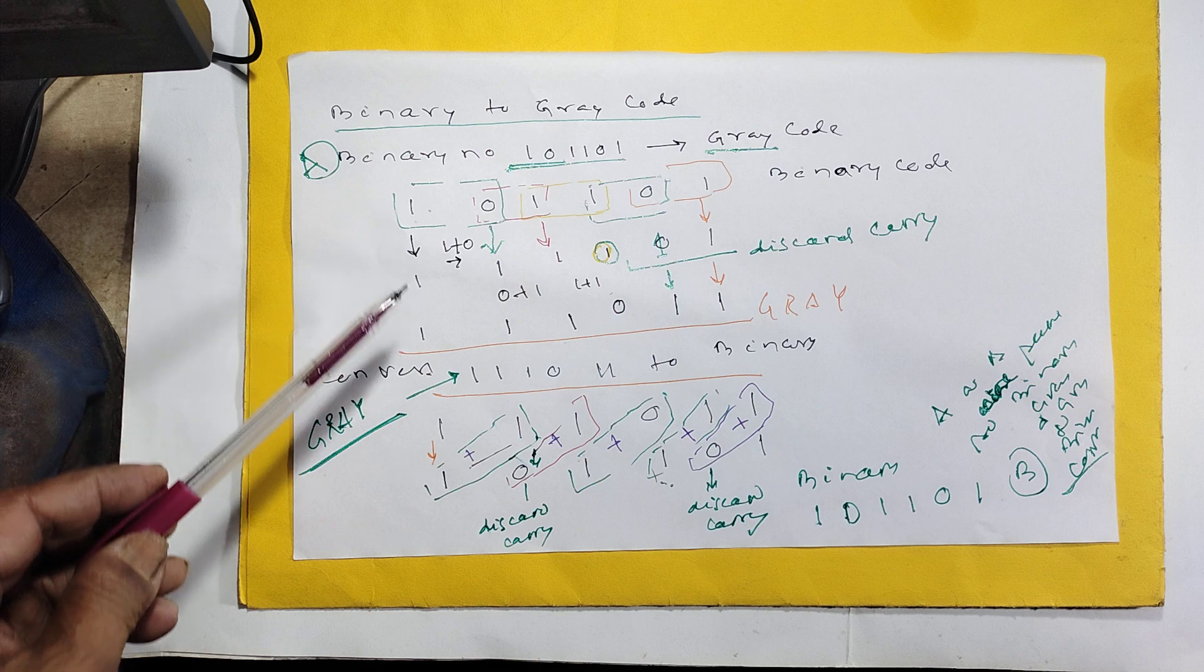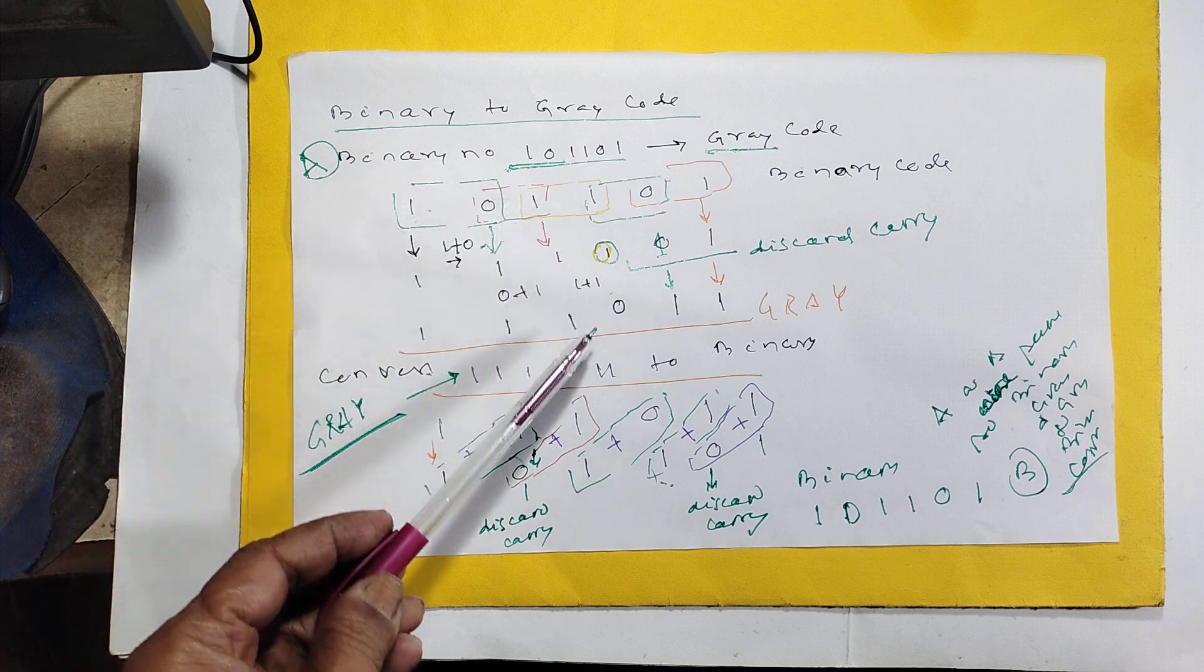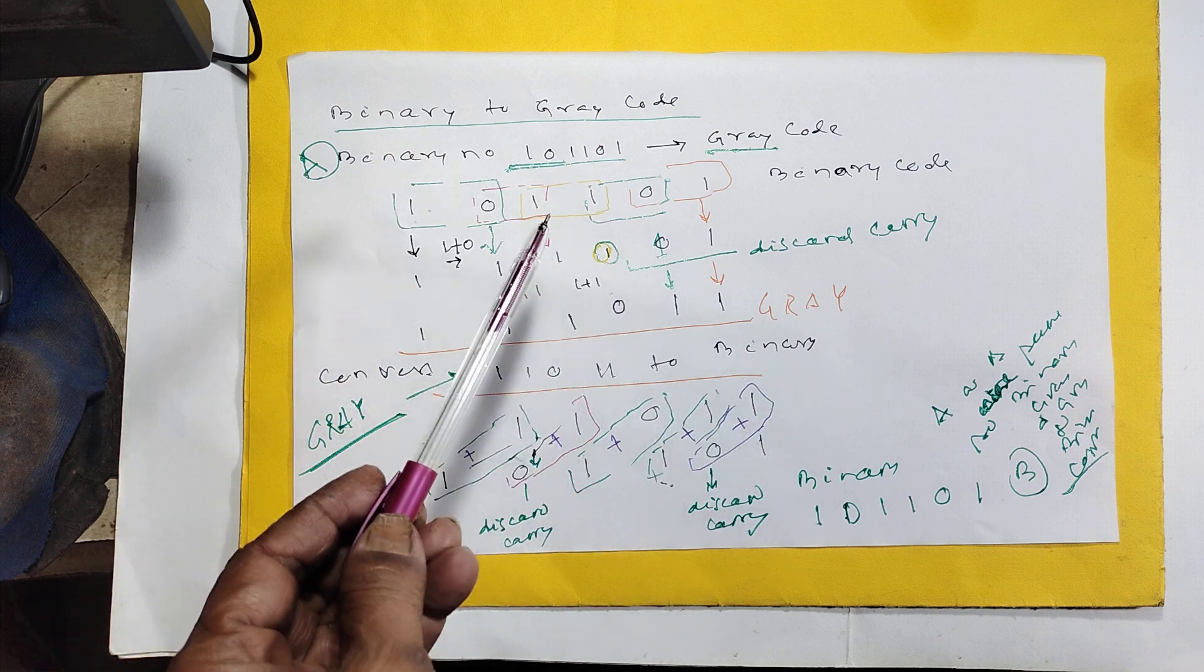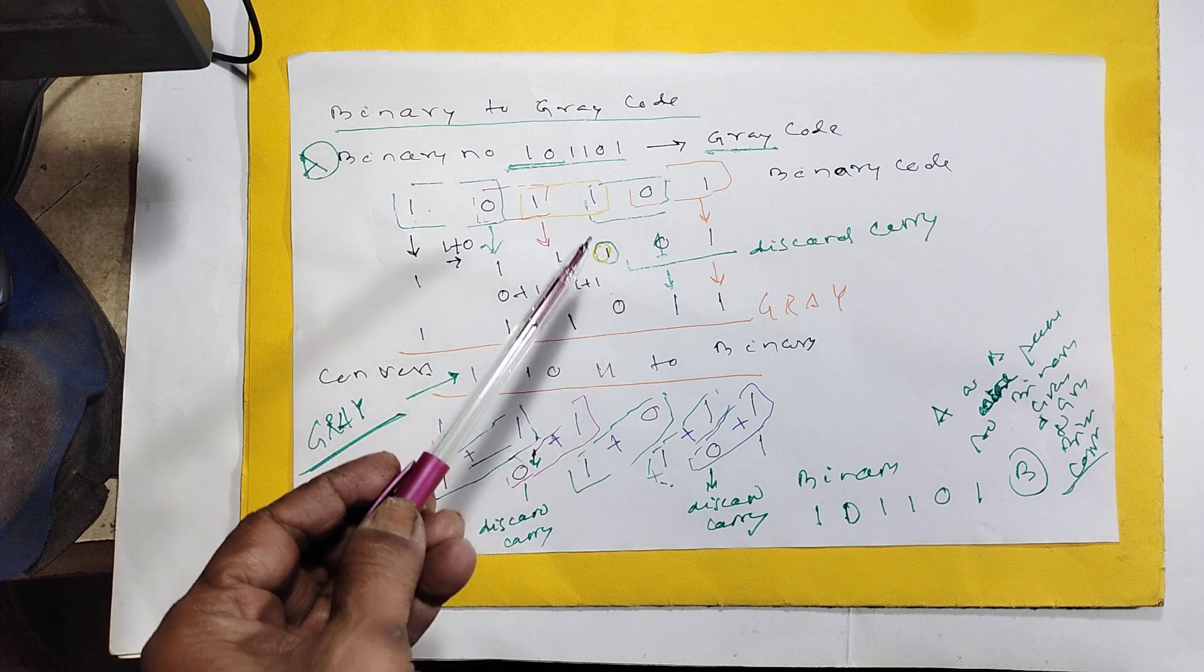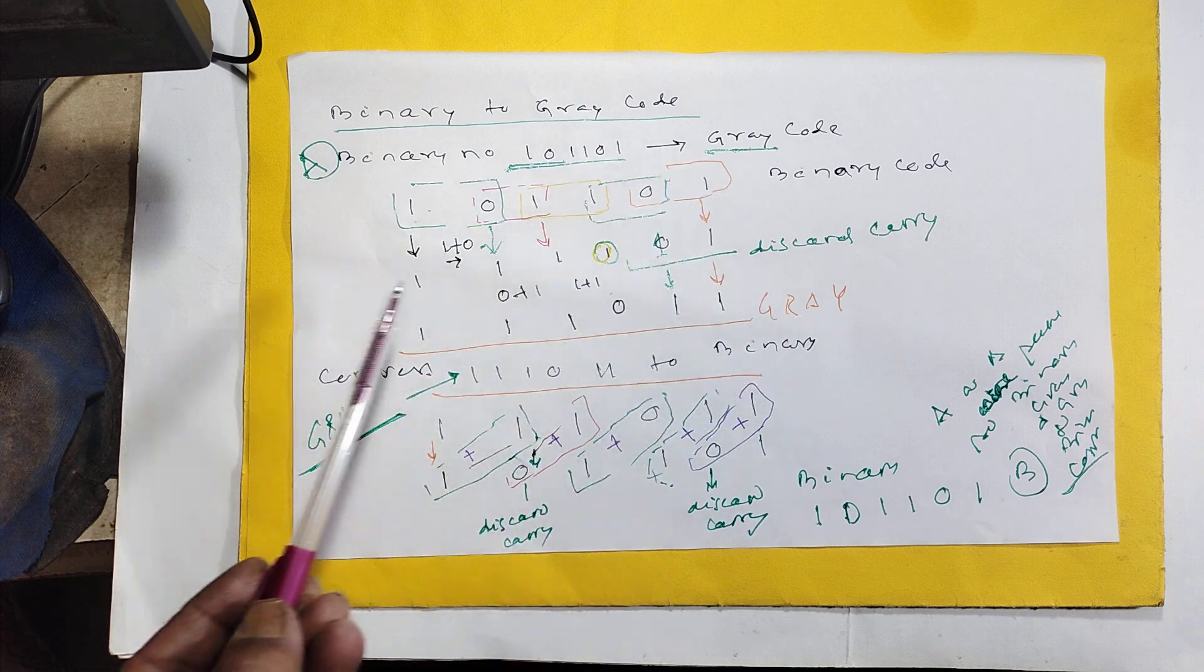This one, make it down. 1 plus 0, 1. 0 plus 1, 1. 1 plus 1, 0. Why? Discard carry. 1 plus 1, 0. Discard carry. 1, 0, 1, 1. 0 plus 1, 1. This is the gray code.